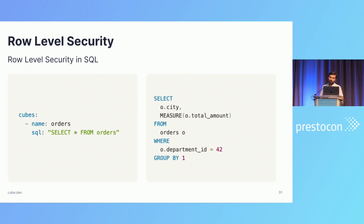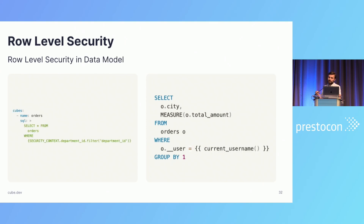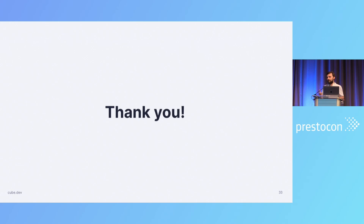A similar example is row-level security. You can expose all the fields which can be used for filtering your data on the headless BI side. On the other hand, you can delegate all row-level security to the semantic layer, in which case you don't need to think about authorization on the BI side and maintain it — you just delegate it to the semantic layer. If it changes, all downstream data tools receive the update. On the other hand, you remove any flexibility to control security features inside downstream tools. That's it from my side, and I'd love to take your questions.